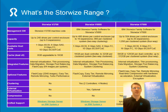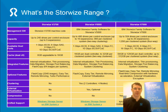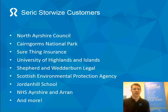The Storwize V7000 is part of the Storwize family — there's also a V3700 and a V5000. You can see the differences here; basically it's about how far it can scale, but the V7000 is the only one which can do compression and encryption. We've got lots of customers using Storwize — councils, healthcare, schools, legal companies, financial companies — so it's a reliable platform.